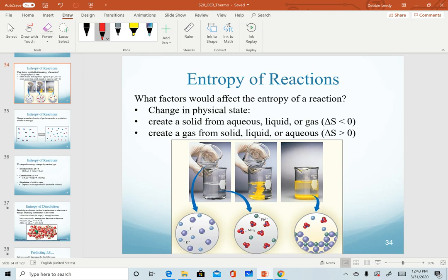One of the first things to consider when we're looking at a chemical reaction is whether we have any changes in physical state between the reactants and products. In a reaction where we create a solid as a product and if we're starting with aqueous, liquid, or gas, we would predict a negative change in entropy.